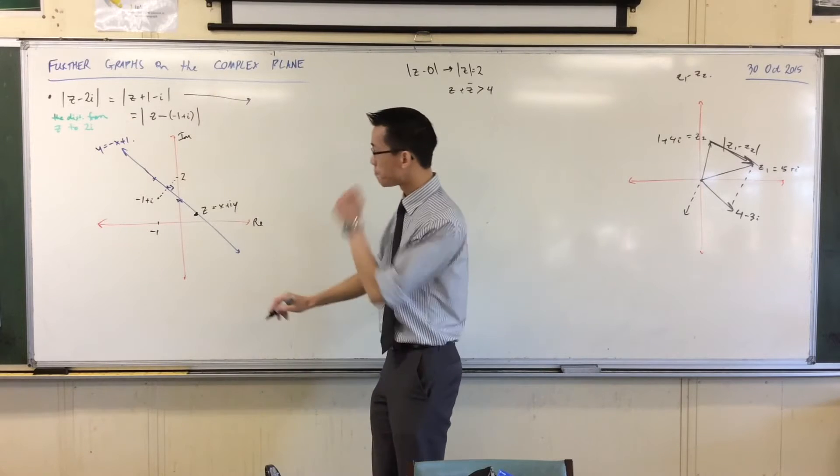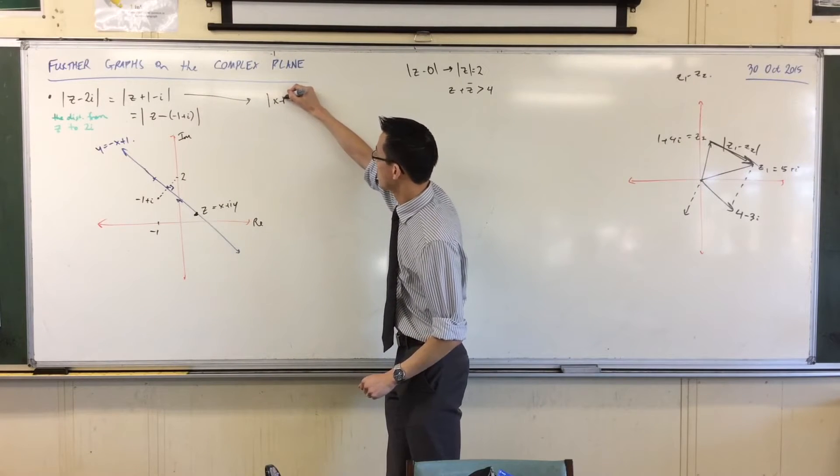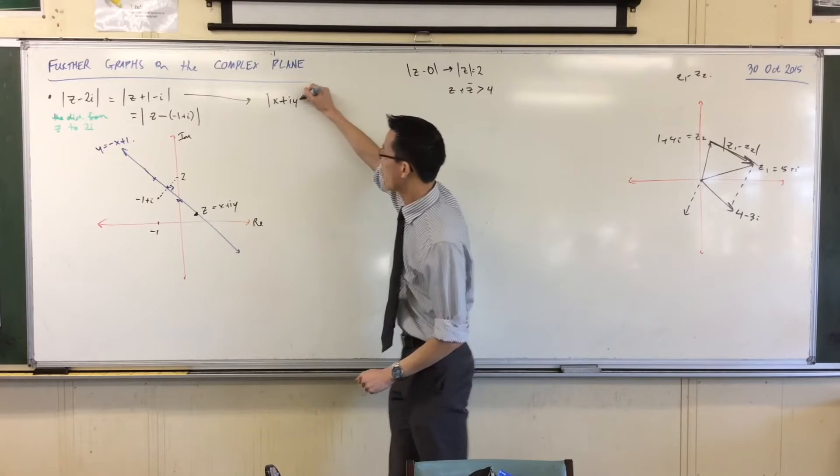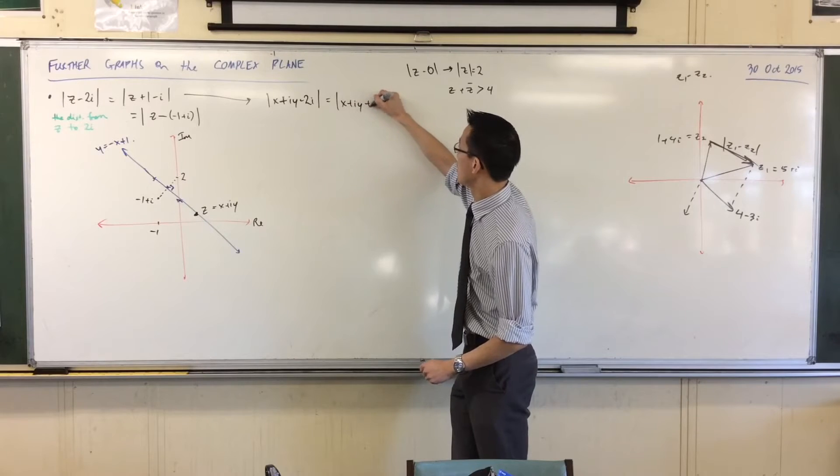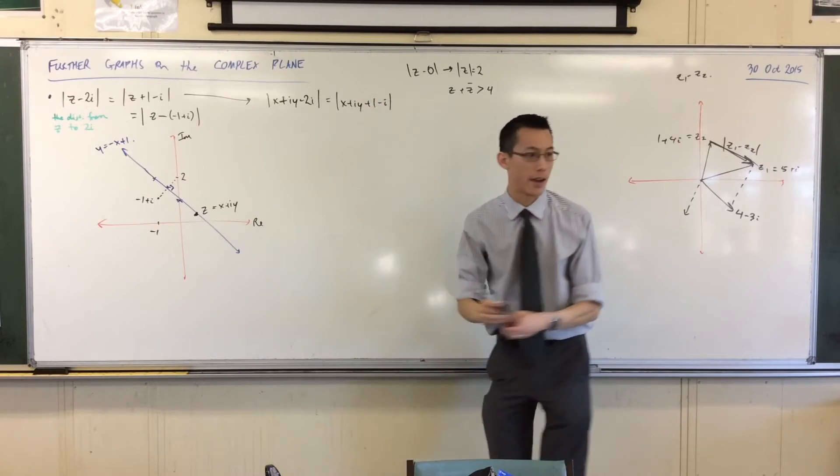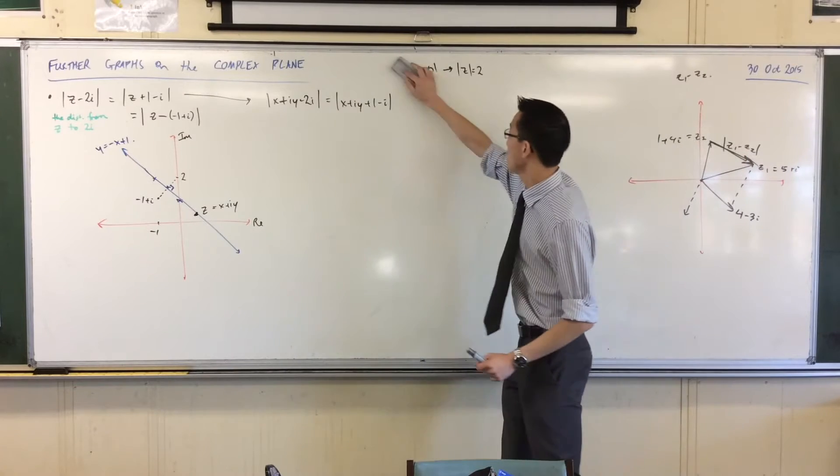So that's going to be here. This is going to be the absolute value of X plus iY plus 2, equals the modulus of X plus iY plus 1, take away 1. Now when you want to work out the modulus of a complex number, we know that the modulus is the square root of...